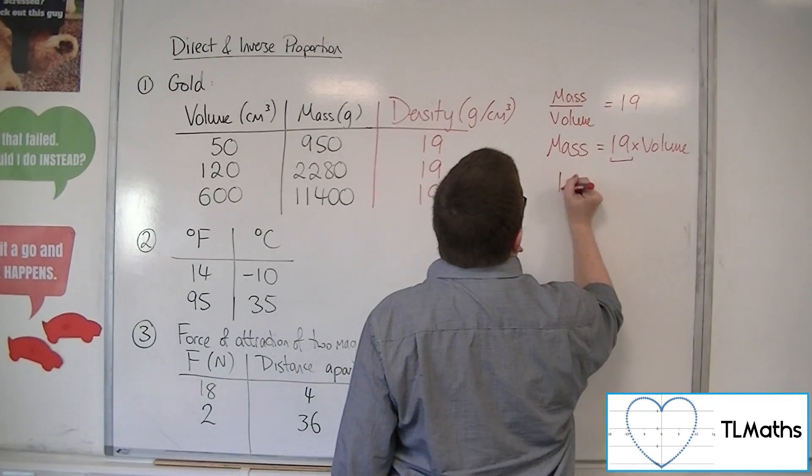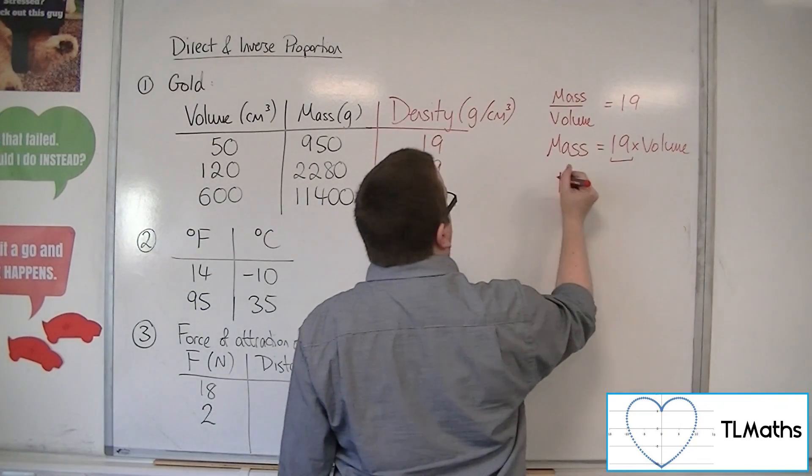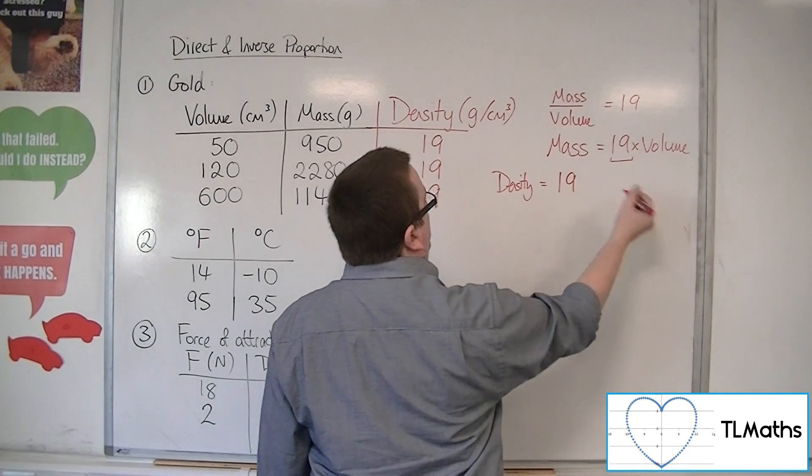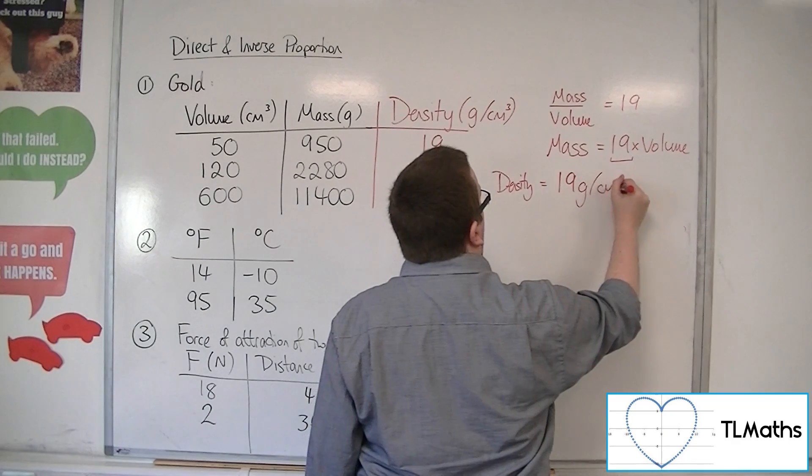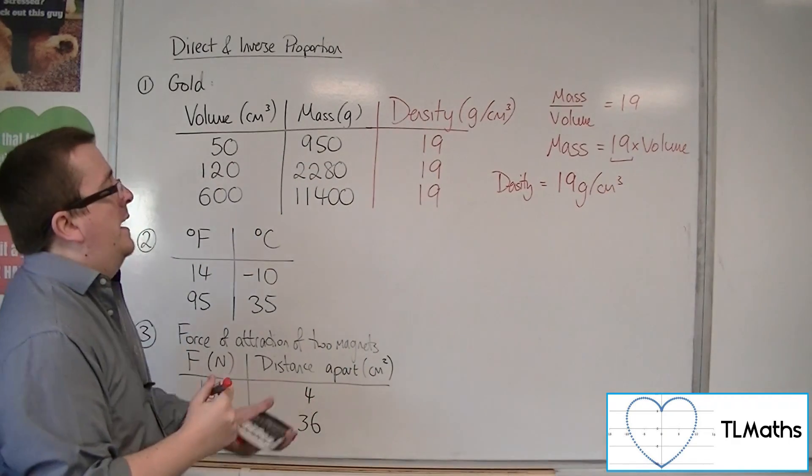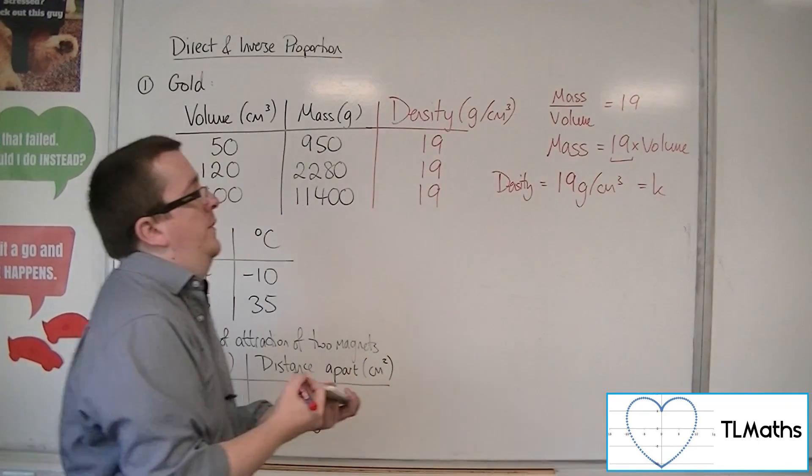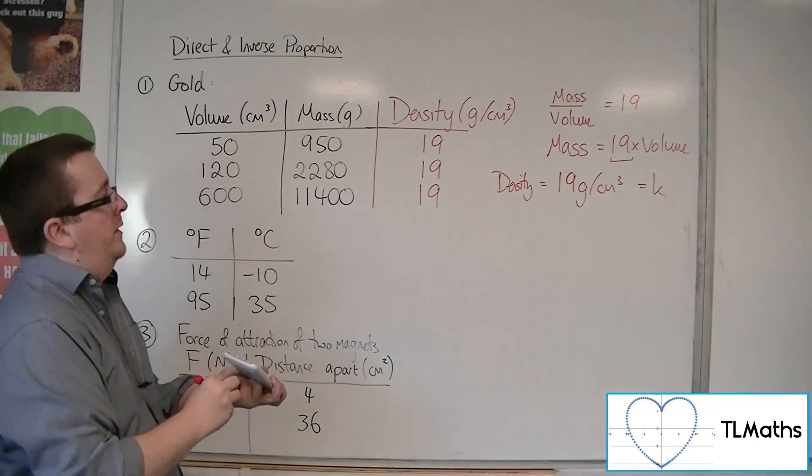So the density of gold is equal to 19 grams per cubic centimeter. And that is the constant of proportionality that we're looking at in that case.